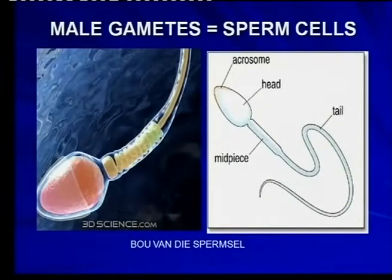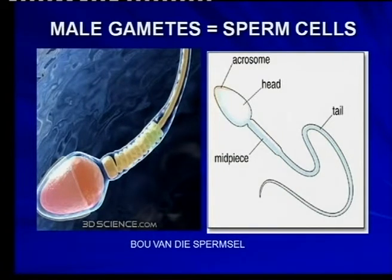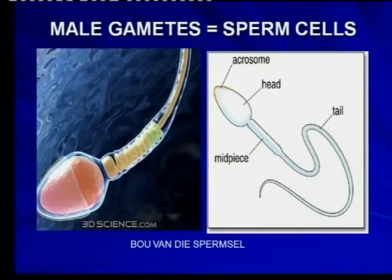And this is where we want to get to — the structure of the sperm cell. Make sure that you are able to draw it yourself. There are certain criteria to drawings: you must have a heading, drawings must be in pencil, labels in ink. Remember that, otherwise you lose your marks.